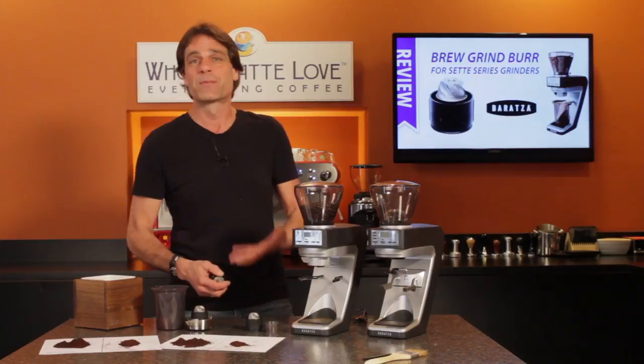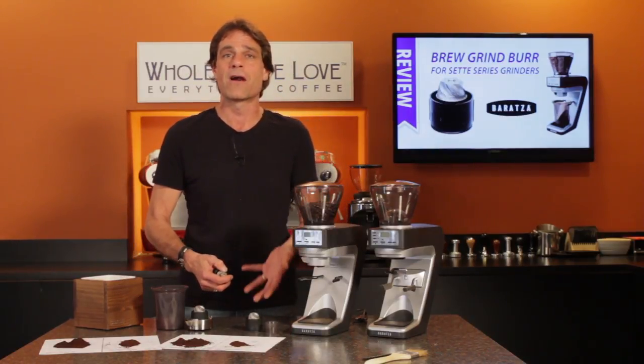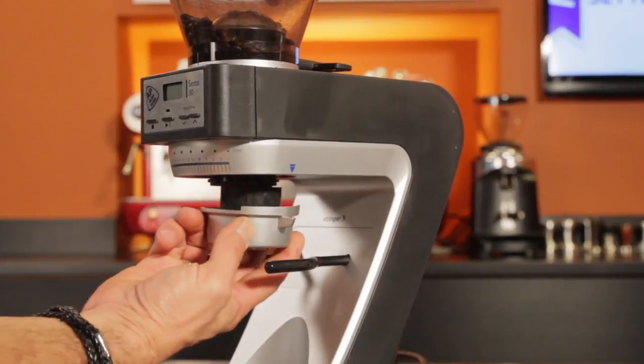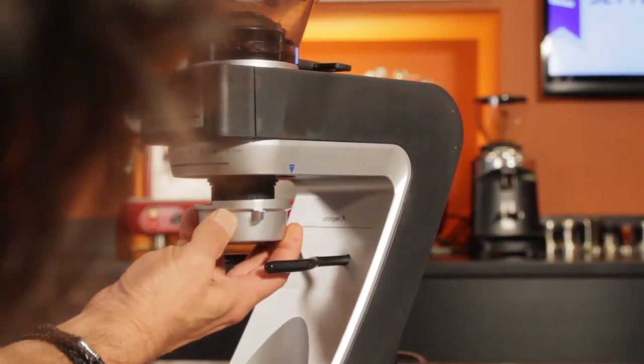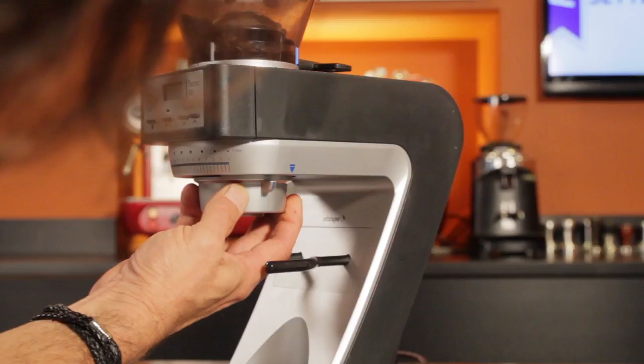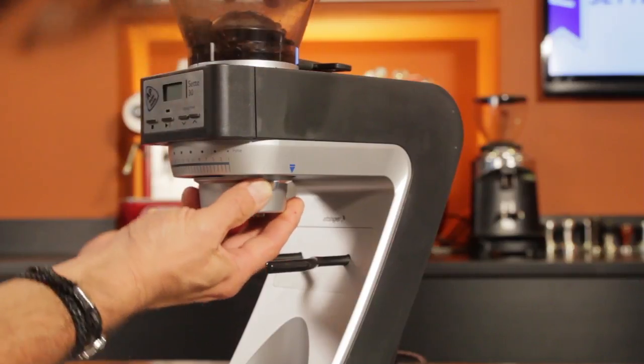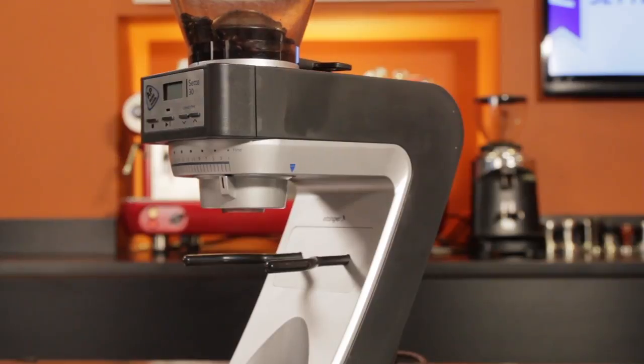To reinstall the burr assembly into the grinder, line up the notch to the blue arrow. You may need to rotate back and forth just a hair to line up the protrusions on the black burr shield before it will fully insert. Once it moves up into place, rotate toward a fine grind setting to engage the burr.